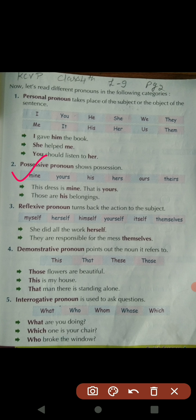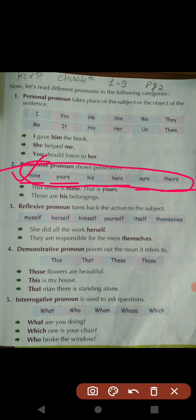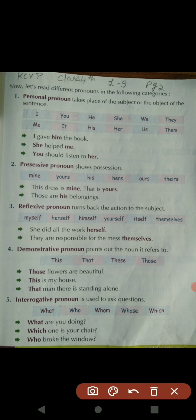Second is possessive pronoun. It is used to show possession — something that belongs to someone. For example, if a book belongs to you, you can say 'This is mine.' So 'mine' is a possessive pronoun. The words in possessive pronouns are: mine, yours, his, hers, ours, theirs. You have to learn which words come under possessive pronoun. Whenever something belongs to someone, that is possessive pronoun — for example, 'his' shows belonging.